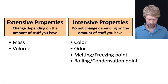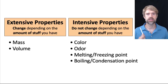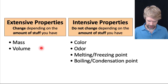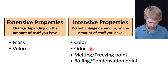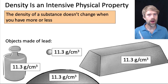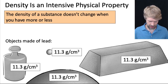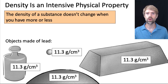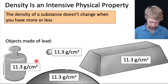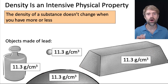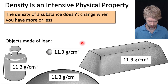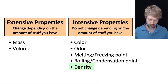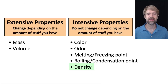Here are some common examples of these two categories. The two big extensive properties to know are mass and volume. Common intensive properties include color, odor, and temperatures for phase changes like melting point and freezing point. There's one more intensive property that often shows up on the TEAS — density. The density of a substance doesn't change when you have more or less. Four objects made of lead with different sizes all have the same density: 11.3 grams per cubic centimeter. Density is an intensive property.